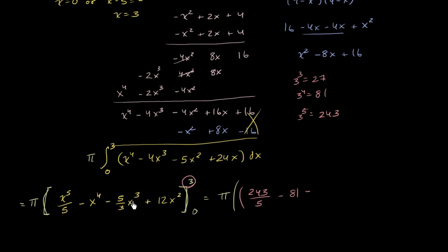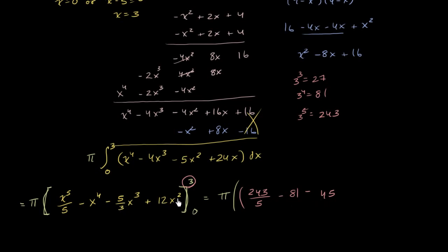Minus: we're going to have 3 to the third, so it's going to be minus 5 over 3 times 27. Well, 27 divided by 3 is just 9, and 9 times 5 is 45. So this simplifies to 45. And then finally 3 squared is 9, and 9 times 12 is 108, so plus 108. These problems that involve hairy arithmetic are always the most stressful, but I'll try not to get too stressed.